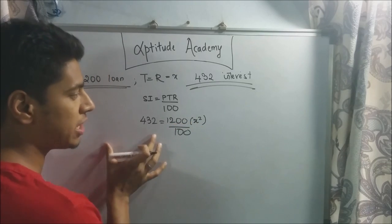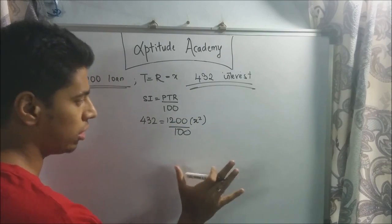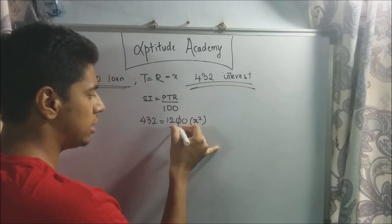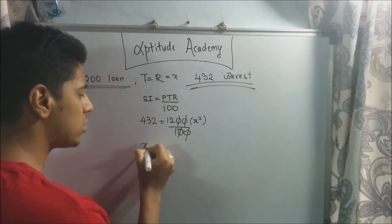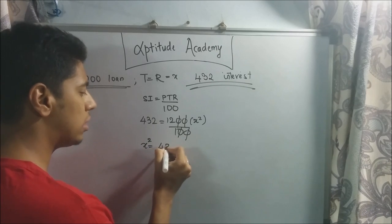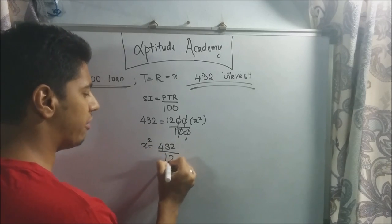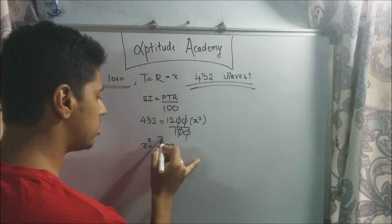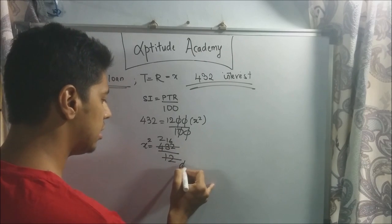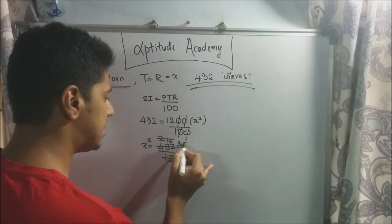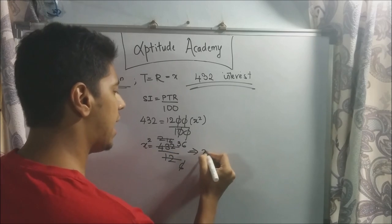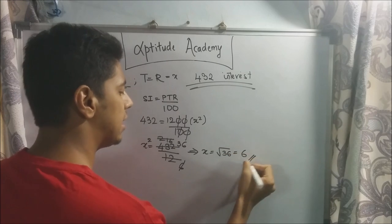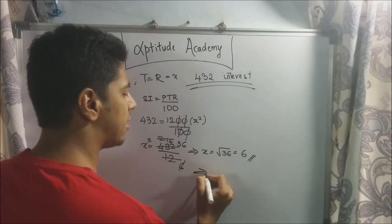The answer should be a perfect square, otherwise something is going wrong. So x squared equals 432 divided by 12, which gives 36. Therefore x equals root 36, which equals 6. The rate of interest is 6 percent.